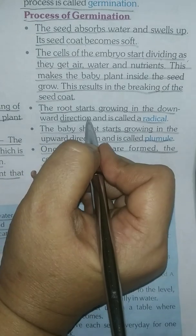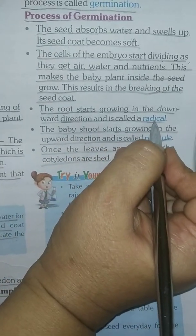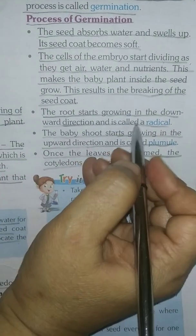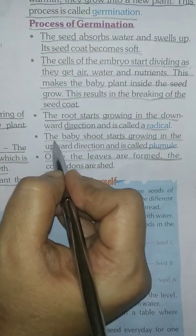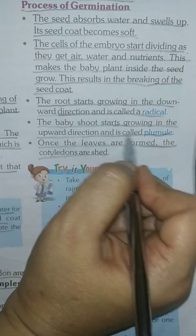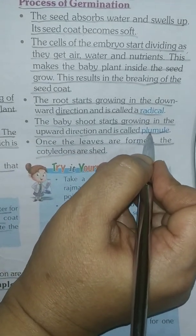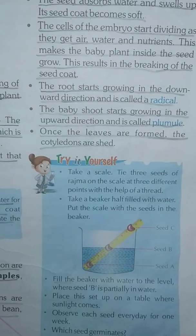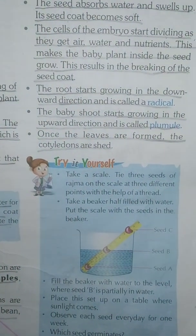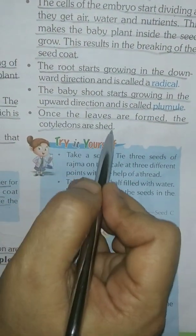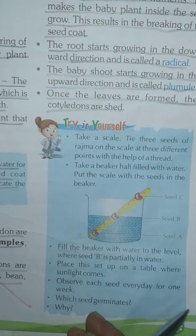The root starts growing in the downward direction and it is called the radicle. The baby shoot starts growing in the upward direction and it is called the plumule. Underline: What is plumule? Once the leaves are formed, the cotyledons are shed.